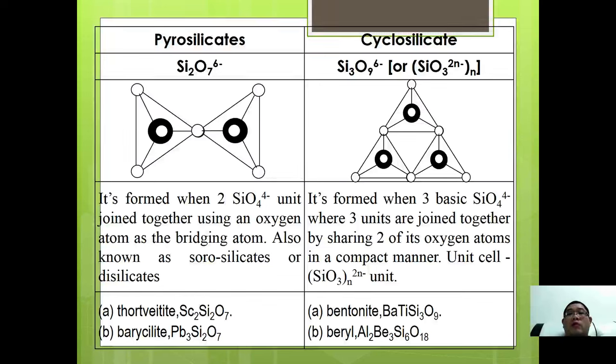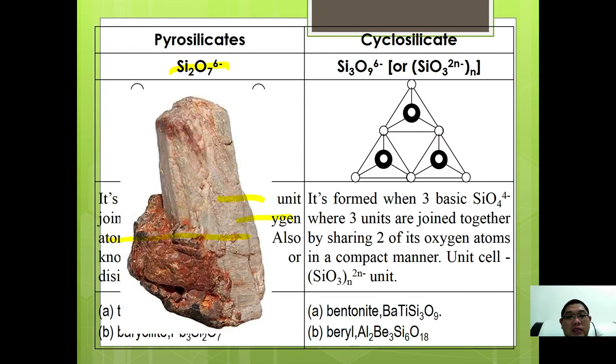The first derivative of silicate is pyrosilicate with formula Si2O7^6-. Pyrosilicate is formed when two SiO4^4- units join together using an oxygen as the bridging atom. It's also sometimes known as sorosilicate or disilicate. Examples are thortveitite and barysilite.